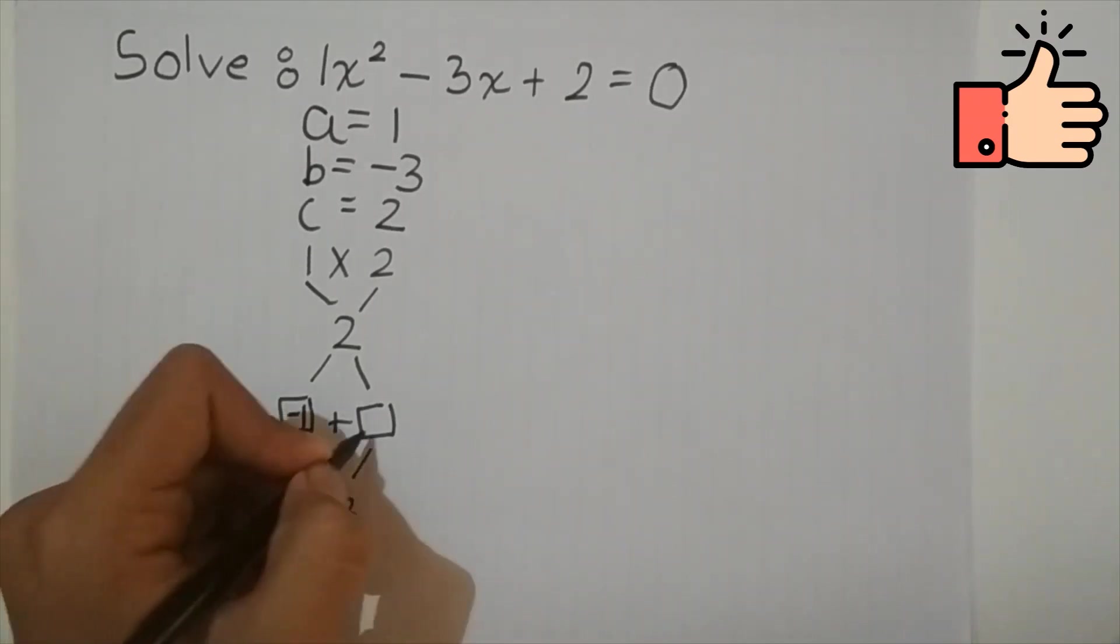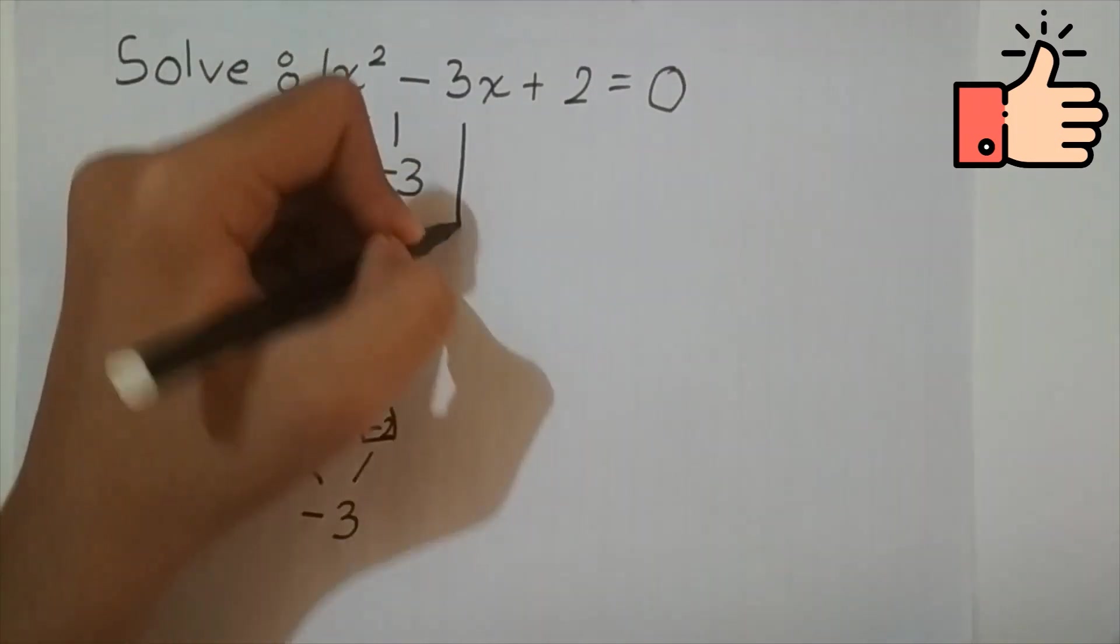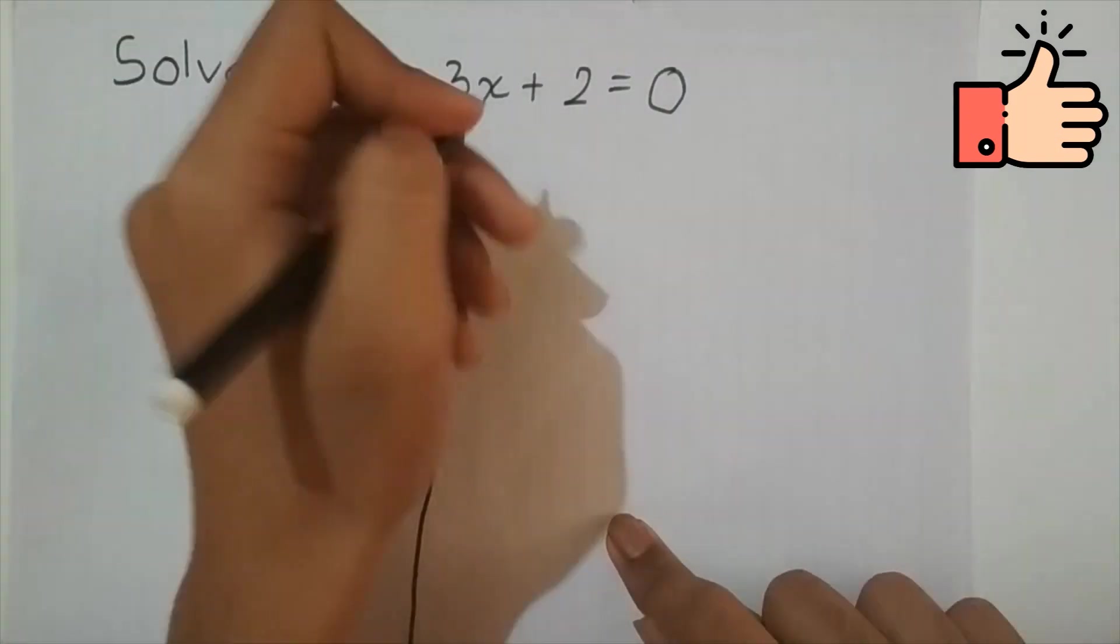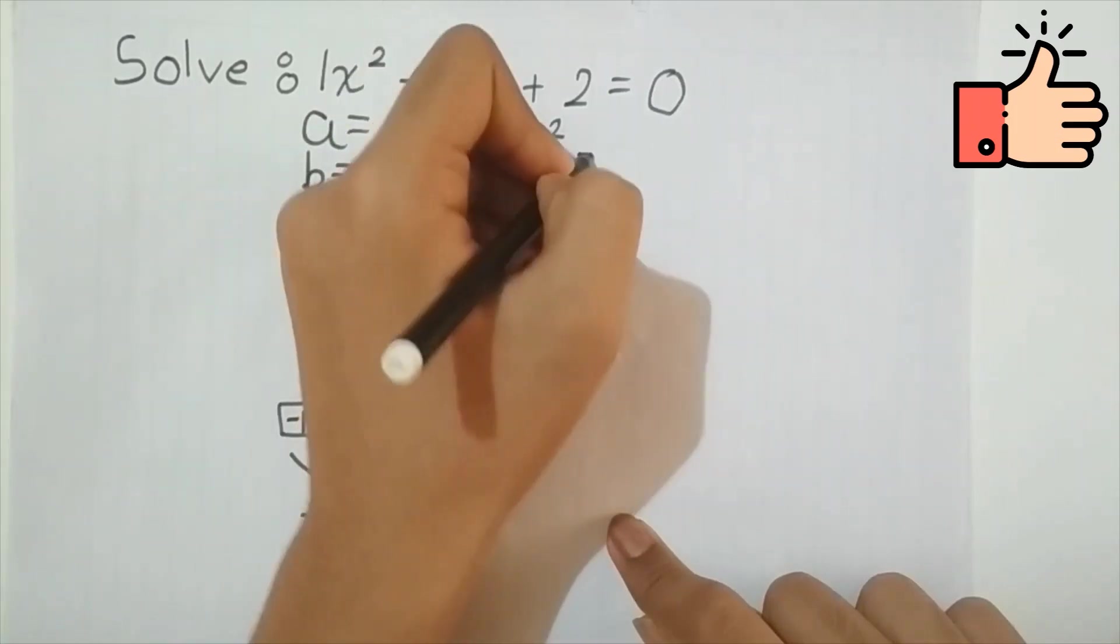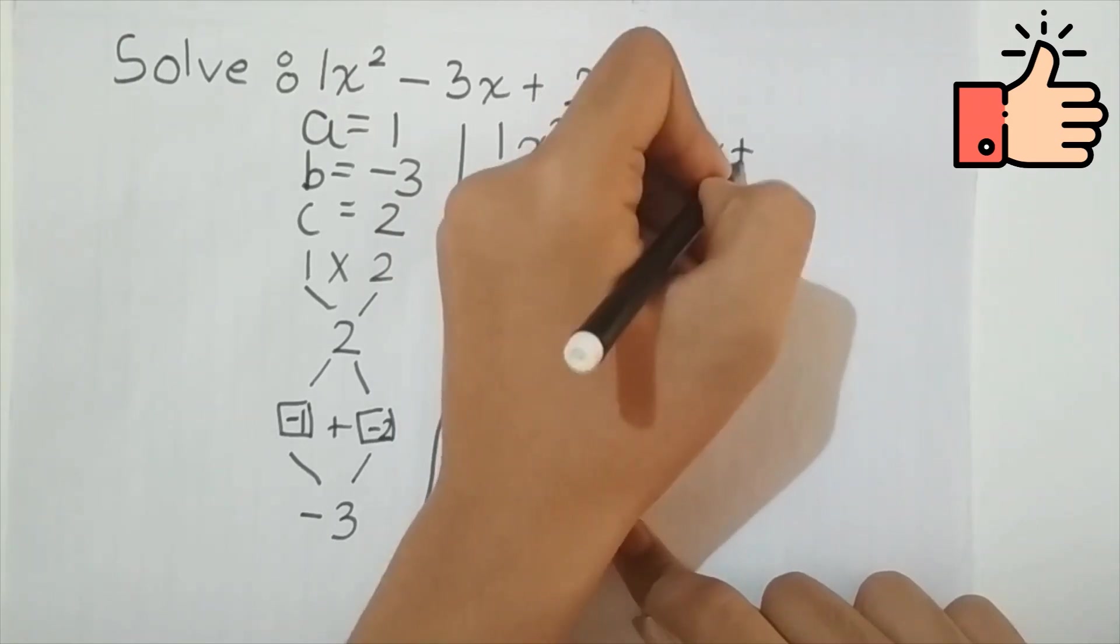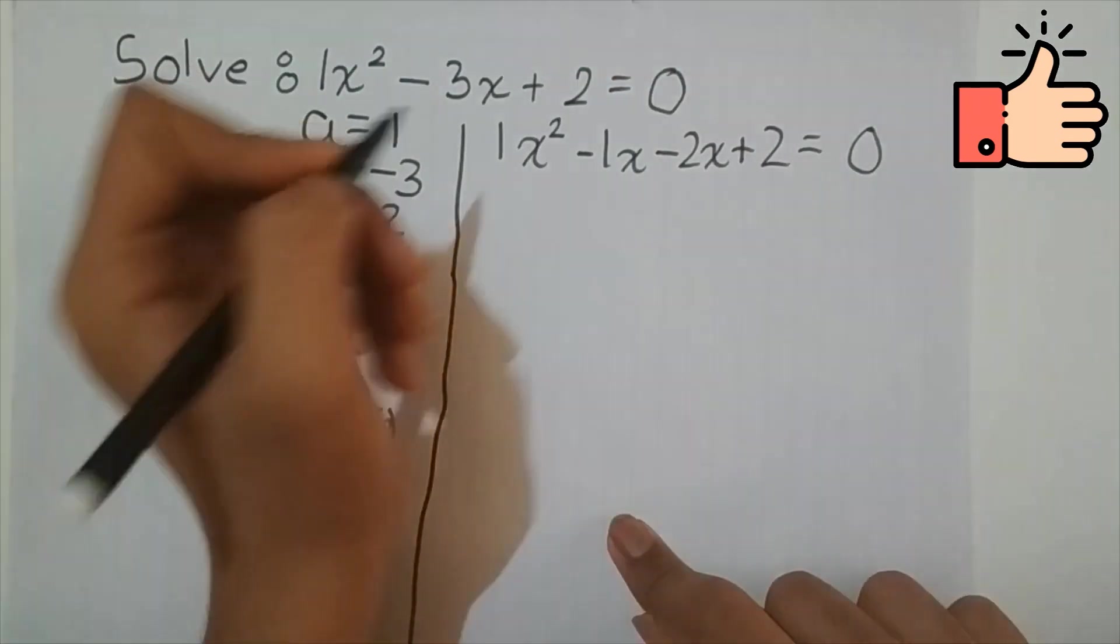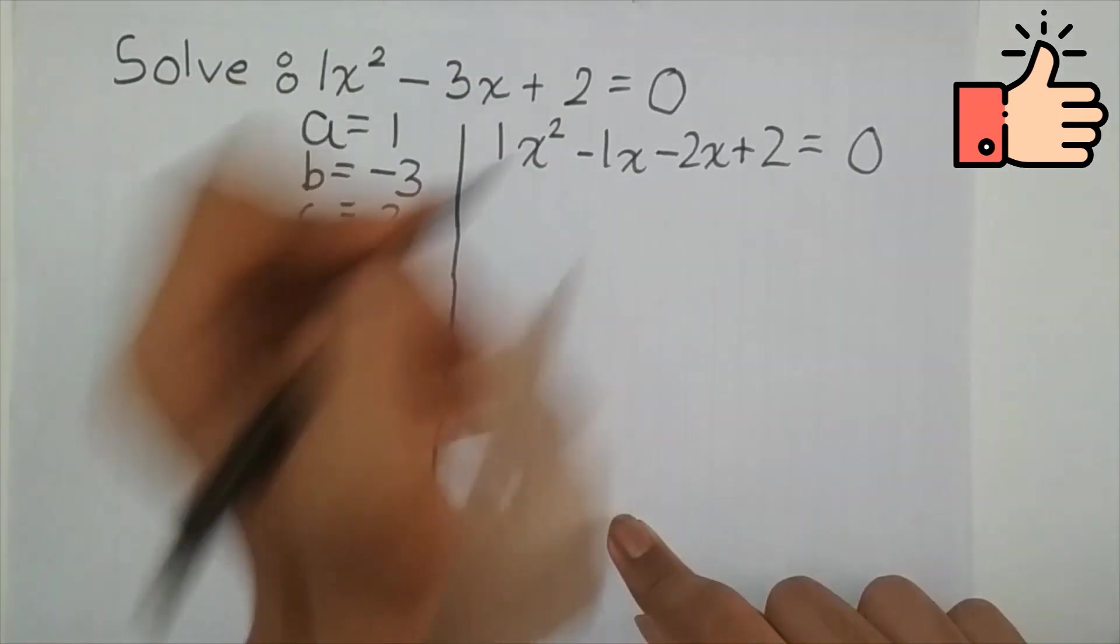So minus 1 and minus 2. So we can write this as 1x squared minus 1x minus 2x plus 2 is equal to 0. And it is perfectly fine as minus 1x minus 2x is minus 3x.